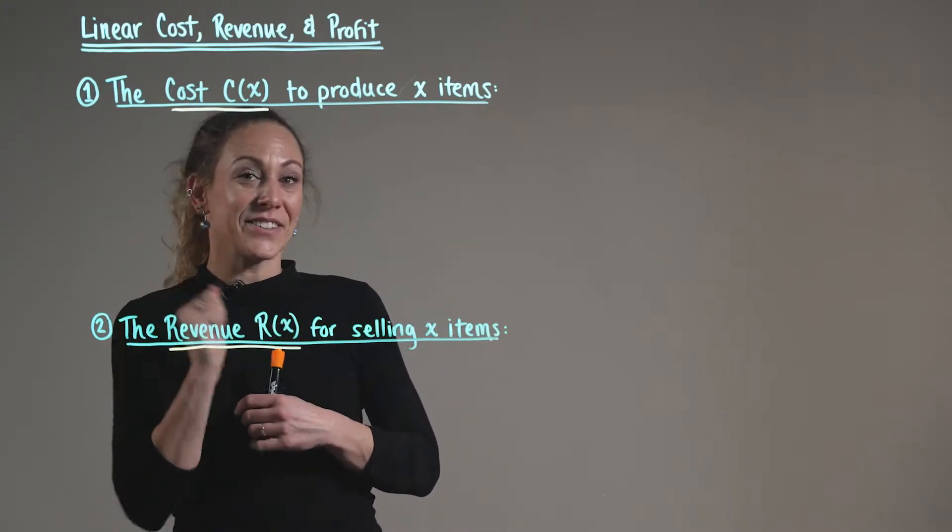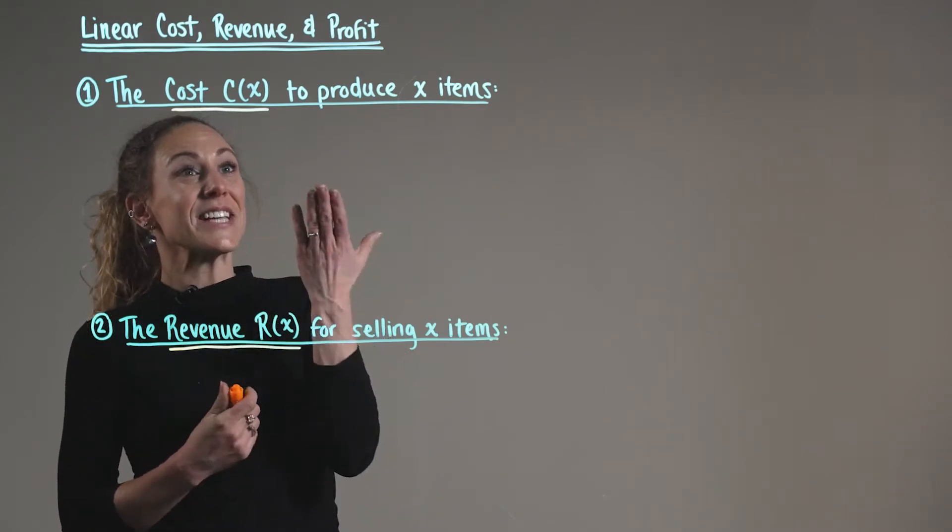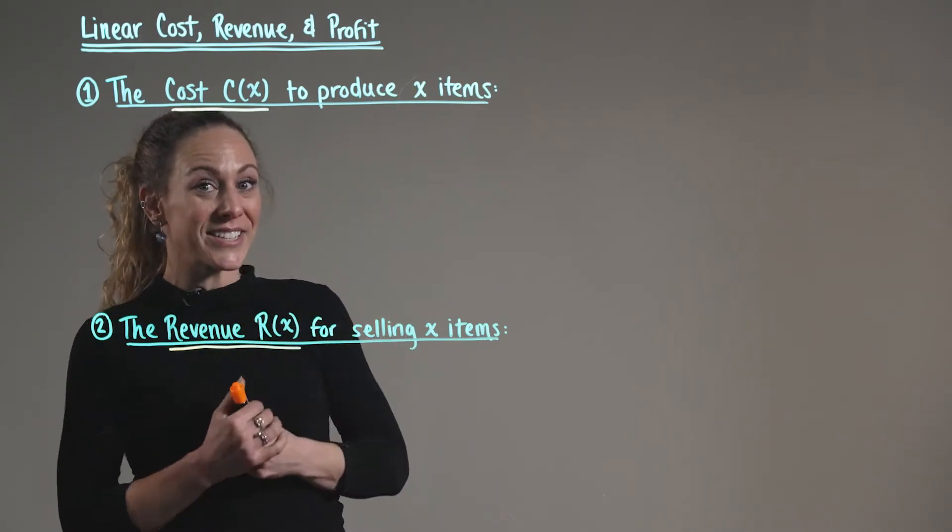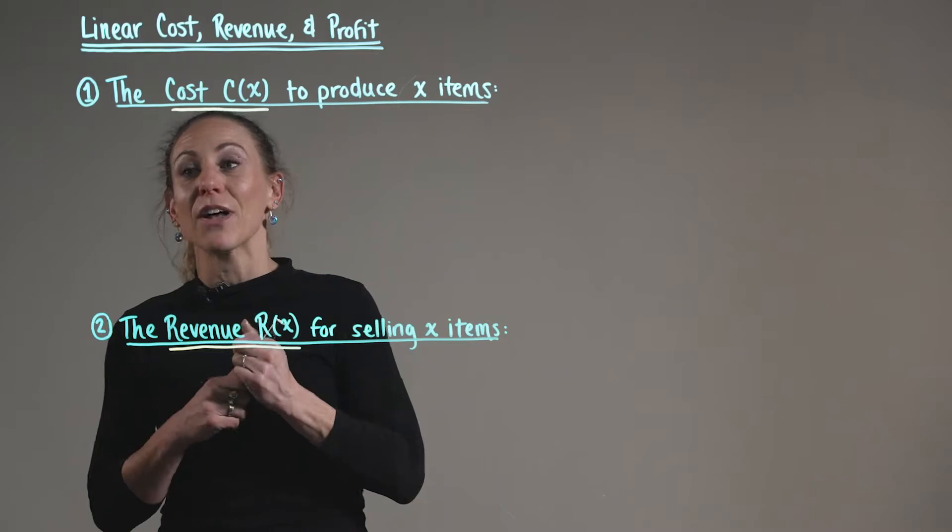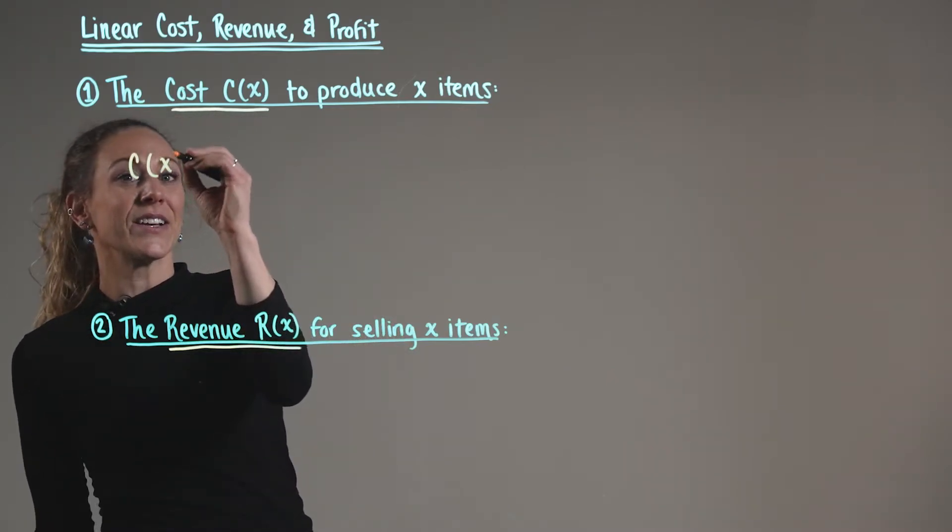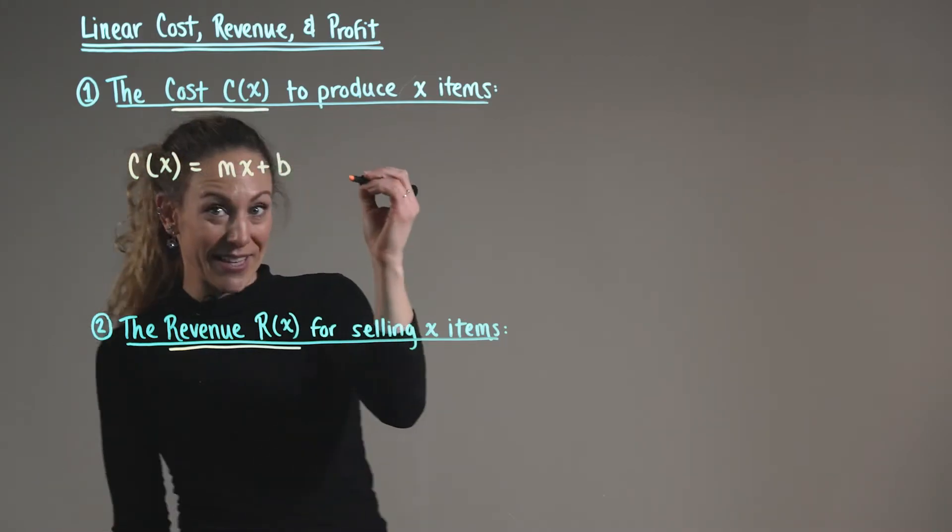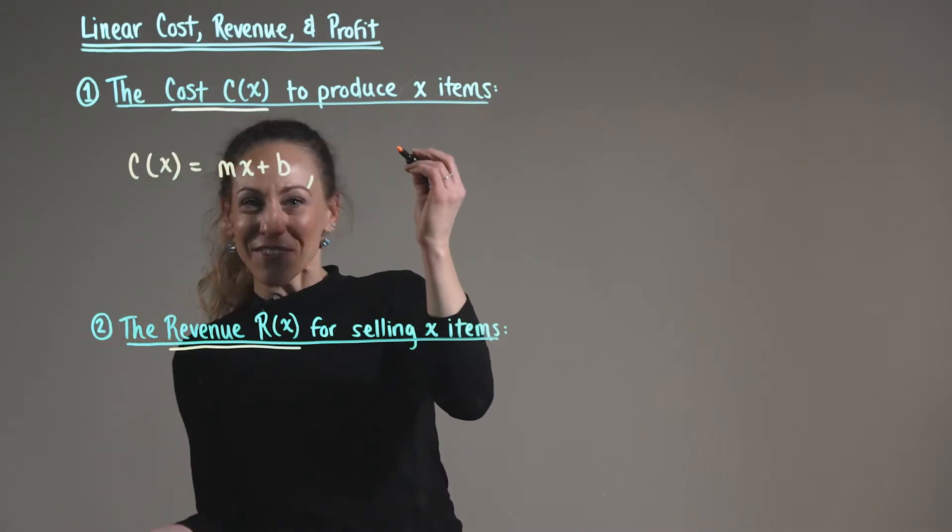Our first idea is cost. The linear function for cost, C(x), to produce x items is defined by the following function. We say that C(x), our total cost, is equal to mx plus b, the equation of a line.